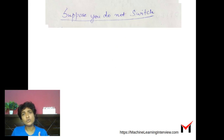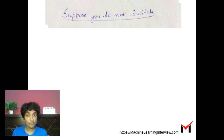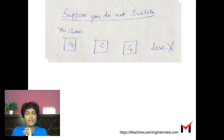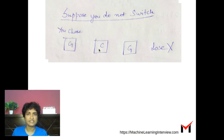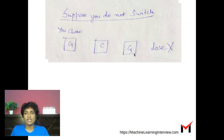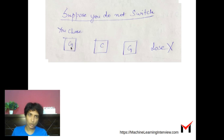There are two cases: suppose you do not switch, and suppose you do switch. Let's first look at what happens when you do not switch. Take the configuration where we have a goat behind the first door, a car behind the second door, and a goat behind the third door. Let's say we chose the first door, which has a goat.